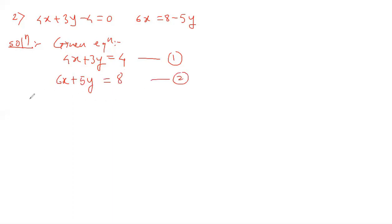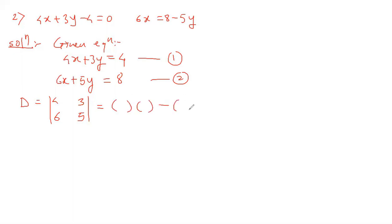First we find D according to Cramer's rule. The coefficient of x is 4, coefficient of y is 3, coefficient of x is 6, coefficient of y is 5. Cross multiplying and subtracting: 4 times 5 is 20, minus 6 times 3 is 18. So 20 minus 18 equals 2.